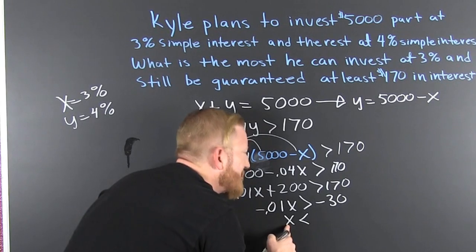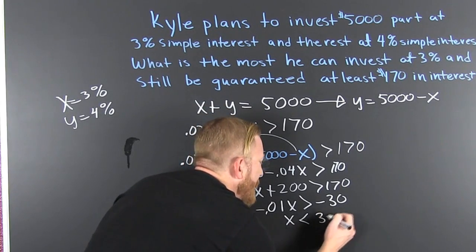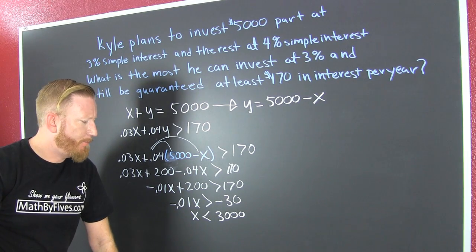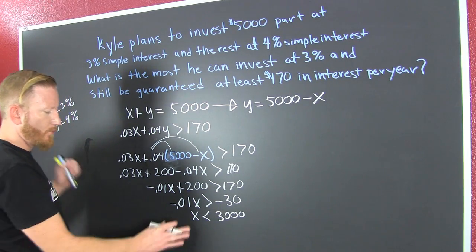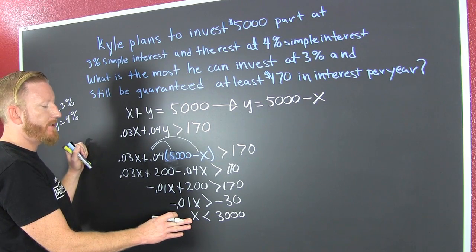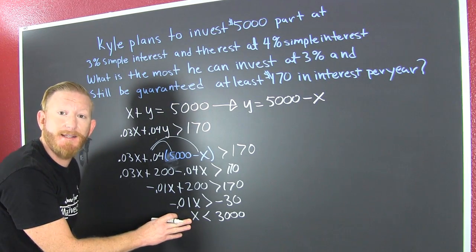X needs to be smaller than $3,000. Well, that doesn't make any sense. He should have X being bigger than $3,000. Wait, wait, X is small... yeah, no, you know what, that's right, and that makes total sense.